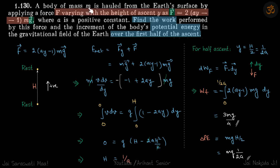A body of mass m is pulled from the Earth's surface with a force varying with height y as F vector equals 2ay minus 1 into mg vector, where a is a positive constant. We need to find the work done by this force and the change in potential energy over the first half of the ascent.